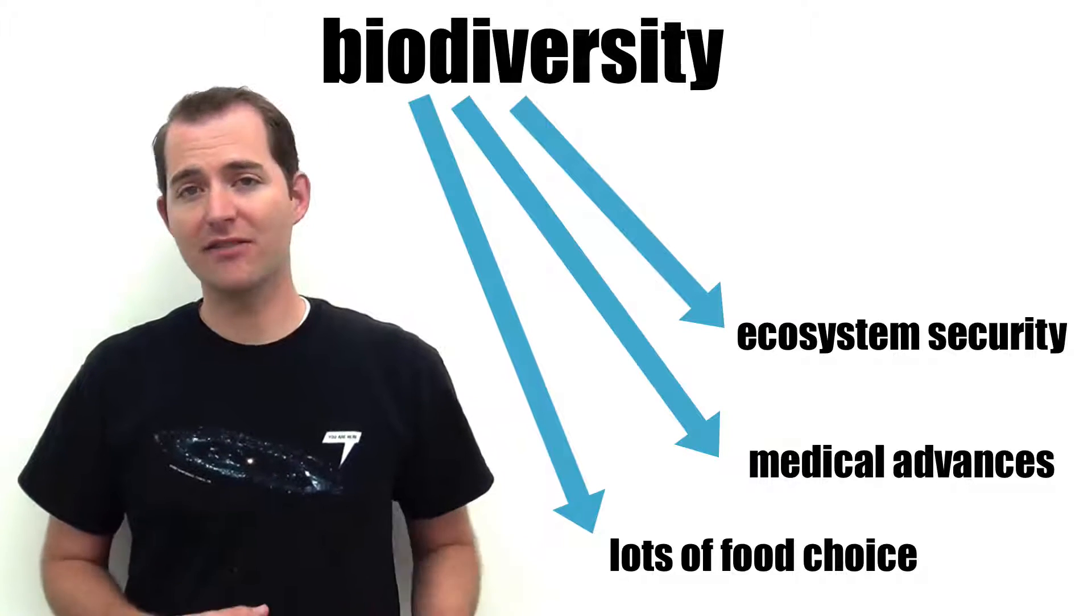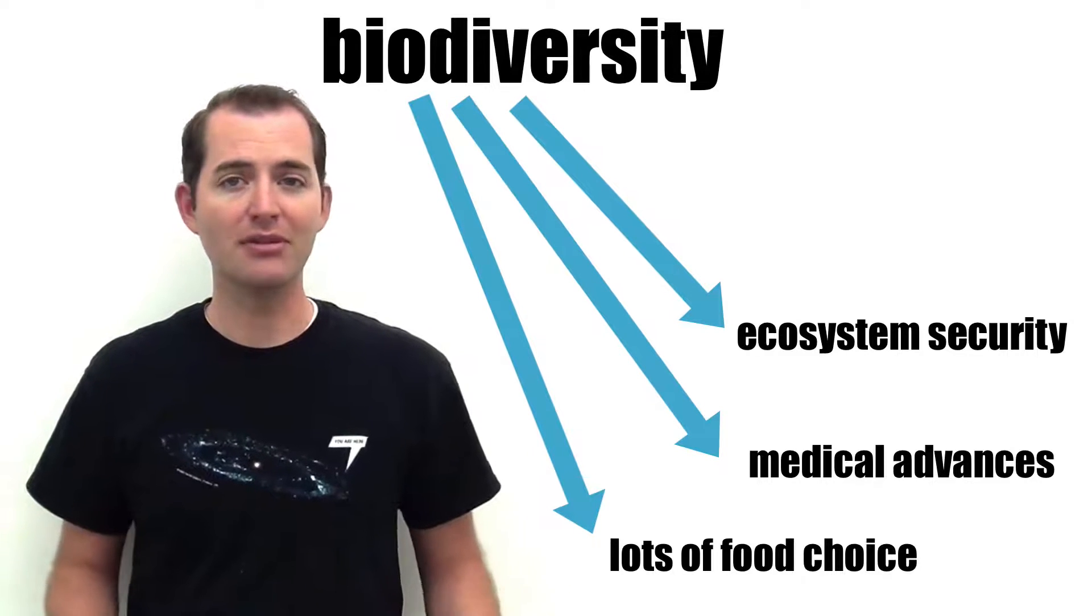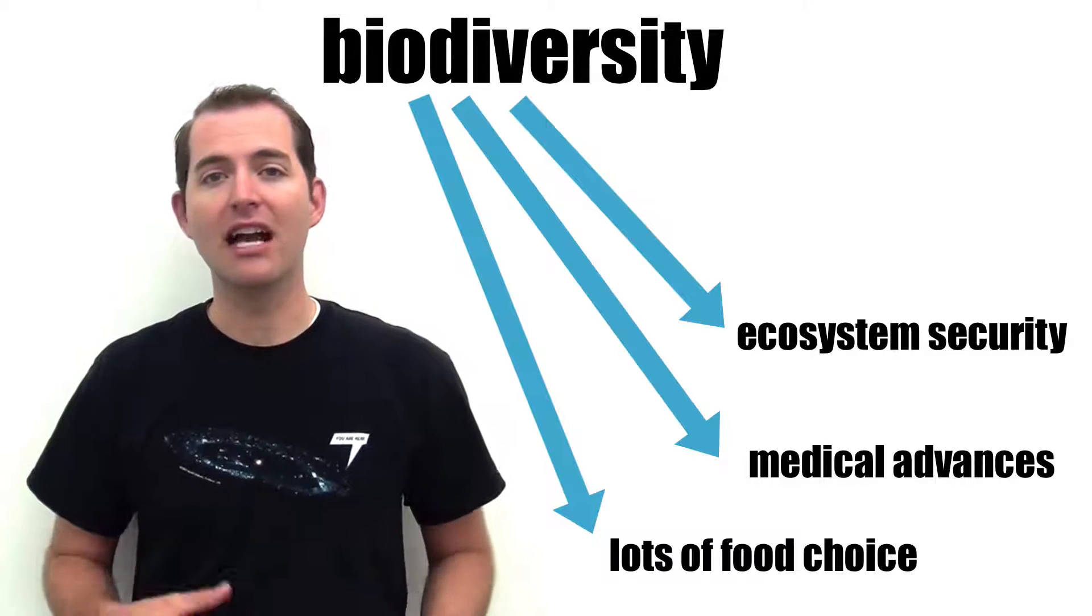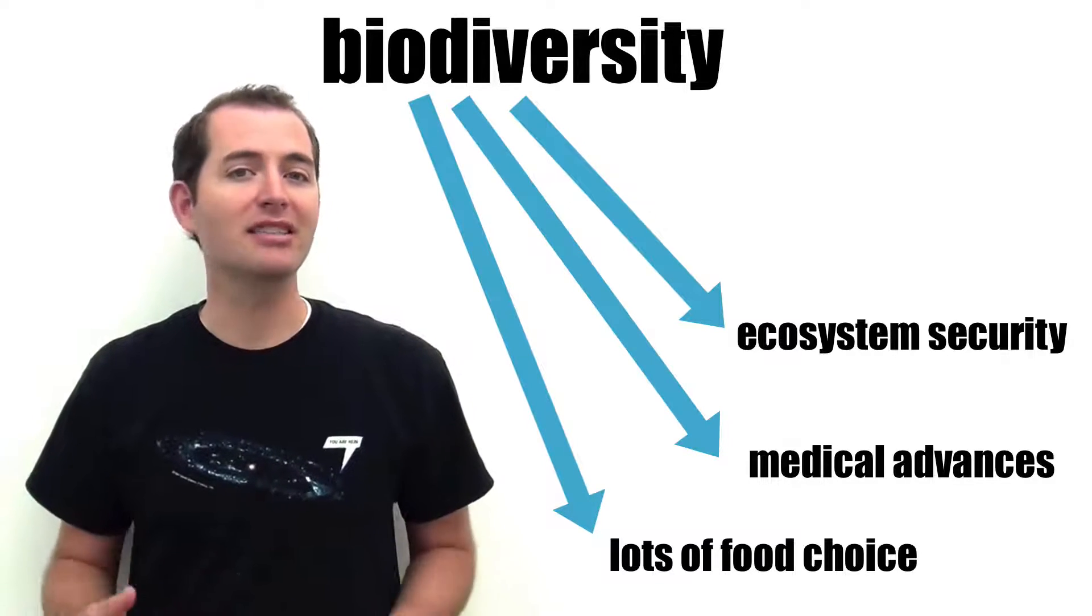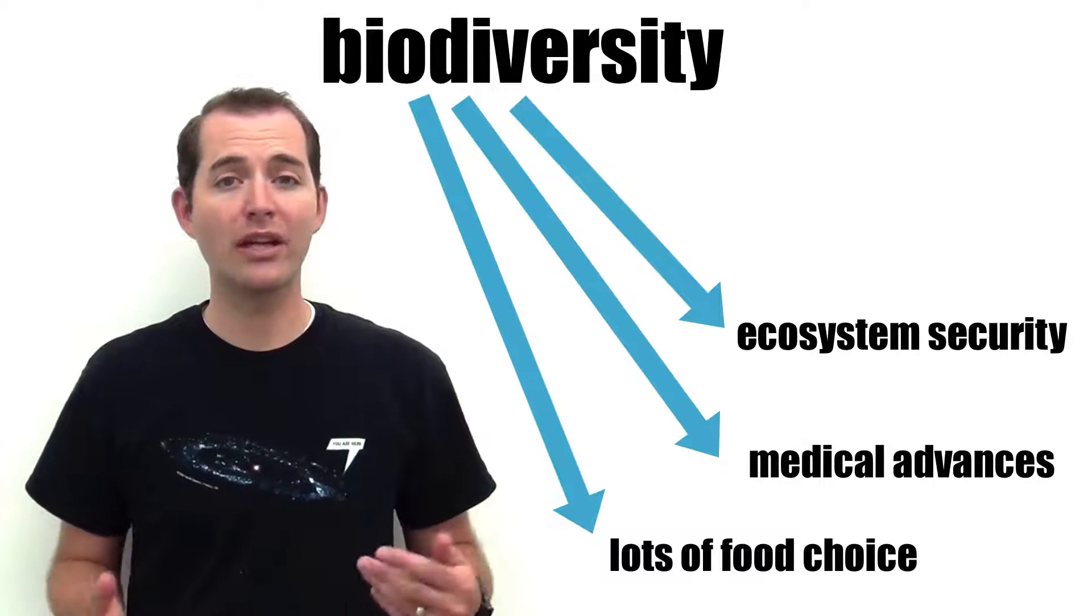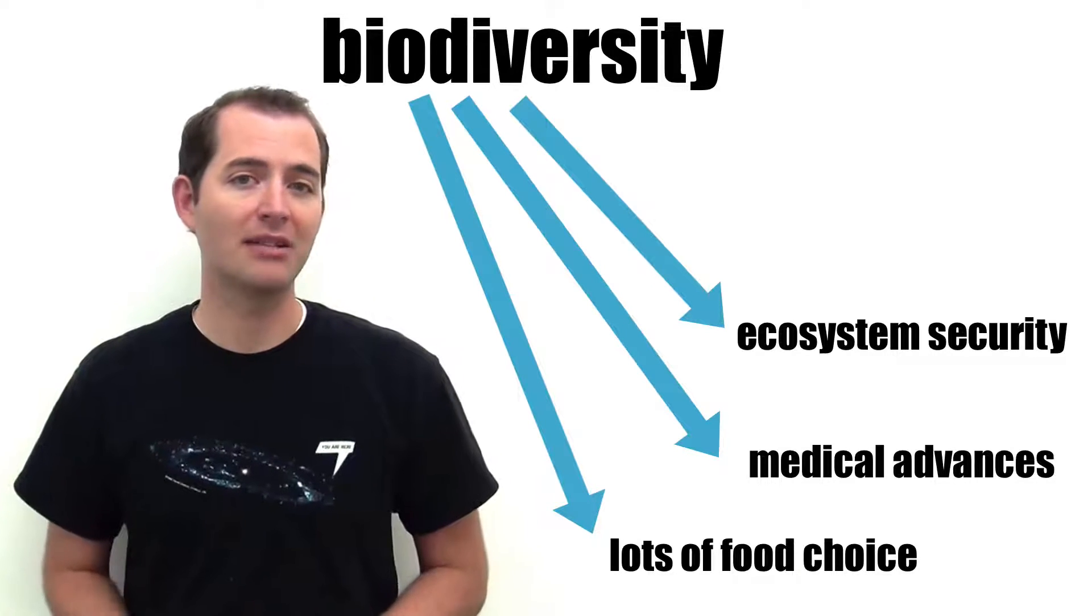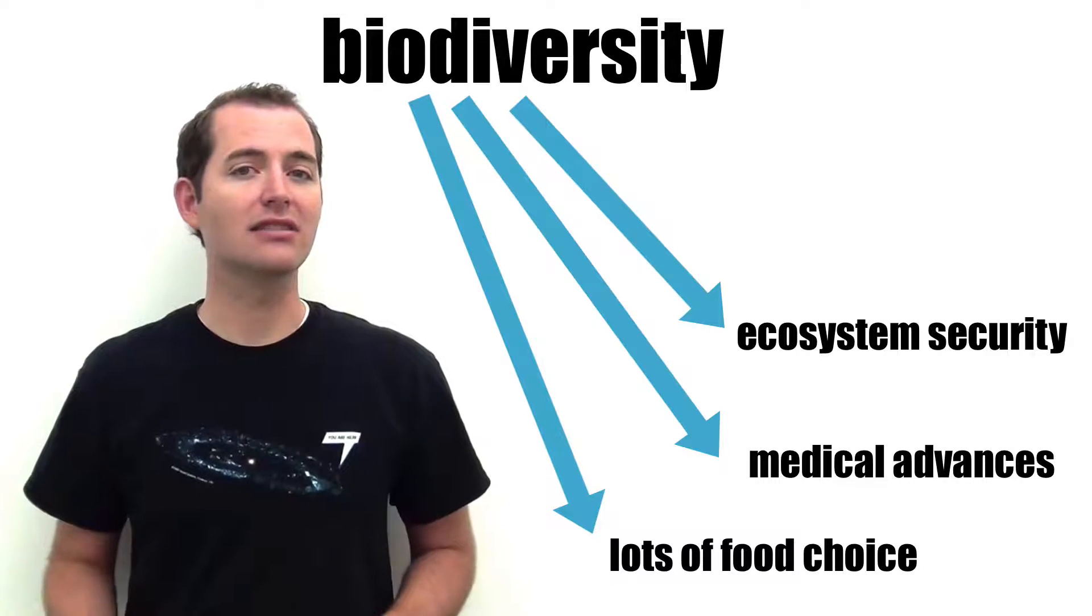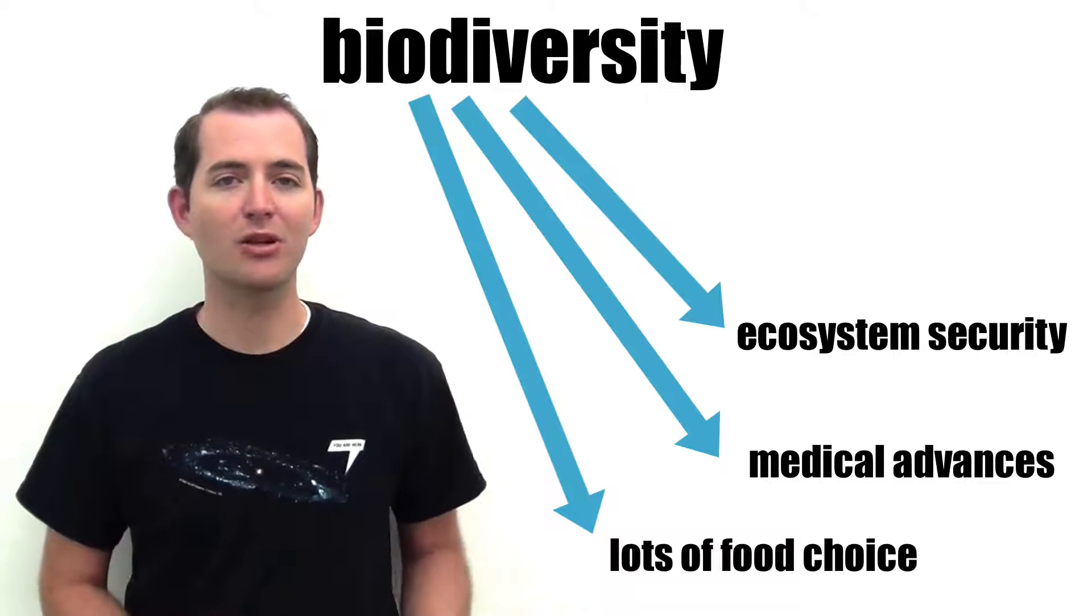Biodiversity also makes it easier for our ecosystems to adjust to disturbances. For example, if we had an ecosystem—say a forest that had 20 reptile species in it—and one of those species went extinct, it would be easier for that ecosystem to adapt than if we had only one reptile species in that forest and that one species went extinct. Diversity in an ecosystem makes it much easier to adapt to disturbances.